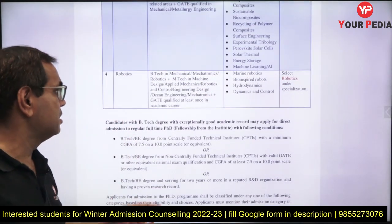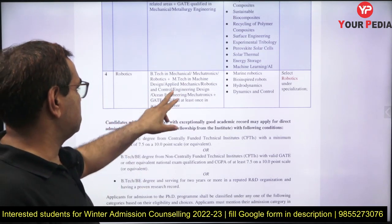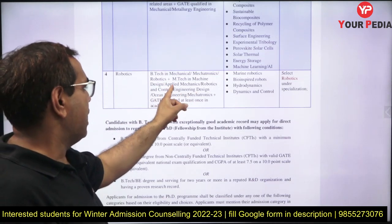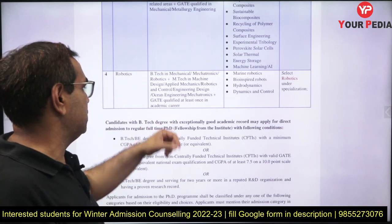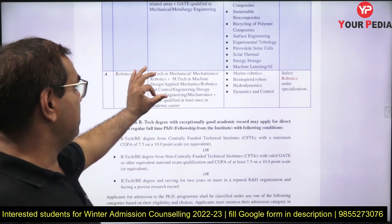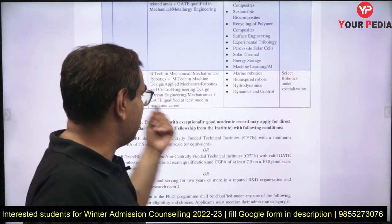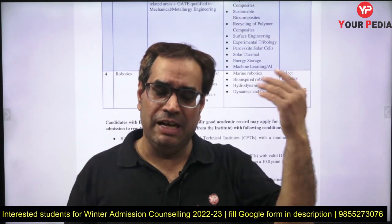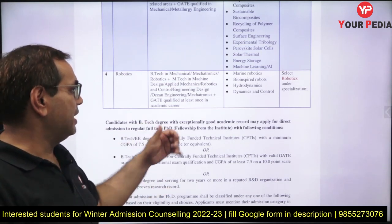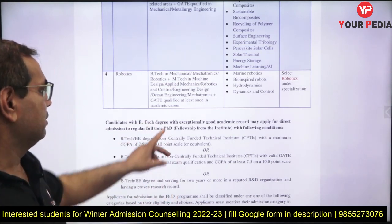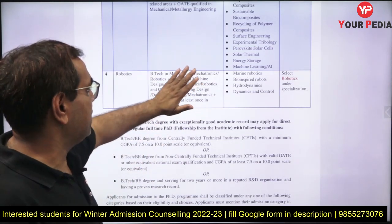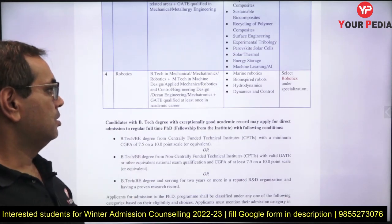For Robotics — a very popular branch nowadays — the criteria is BTech in Mechanical, Mechatronics, or Robotics, plus MTech in Machine Design, Applied Mechanics, Robotics, Control Engineering, Ocean Engineering, or Mechatronics. For GATE, you only need to have qualified at least once in your academic career. Even if that score is now expired or invalid, it still counts — at least once is sufficient.